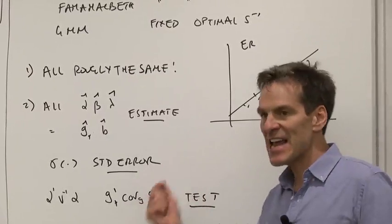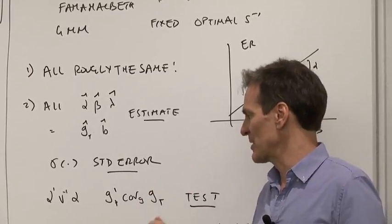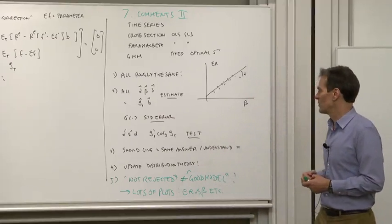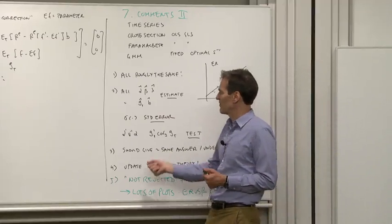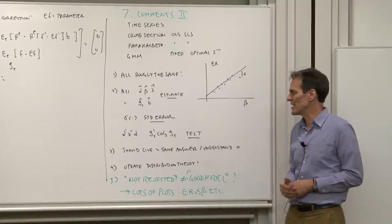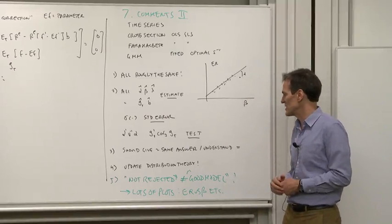How do you produce a test of the asset pricing model, which is that all of the alphas are collectively equal to zero? And that was always of the form a quadratic form in the alphas or a quadratic form in the GTs, which is the same thing as the alphas. That's how you do a test.